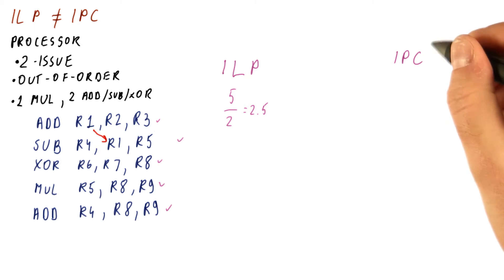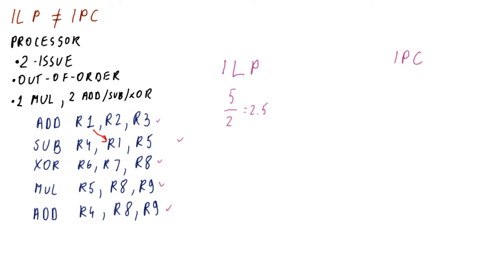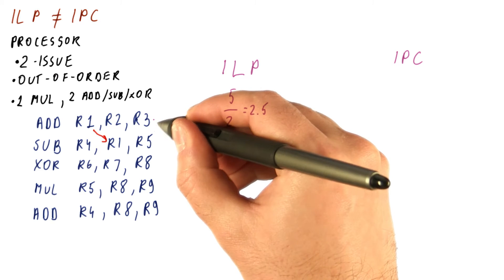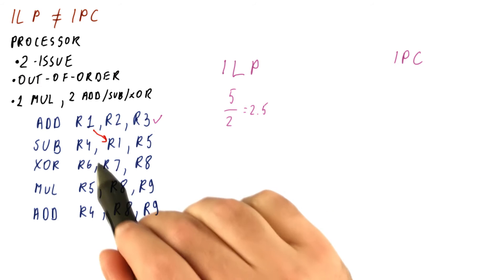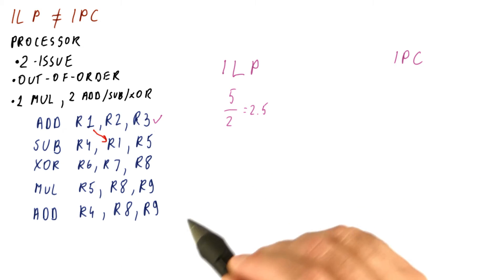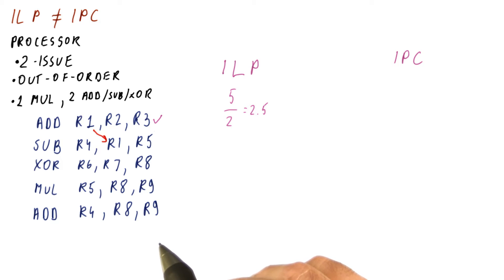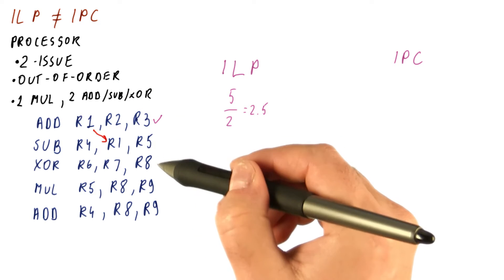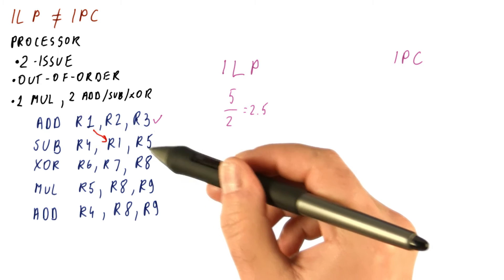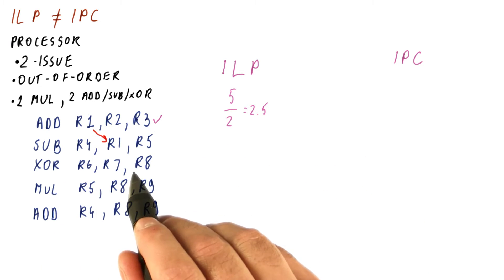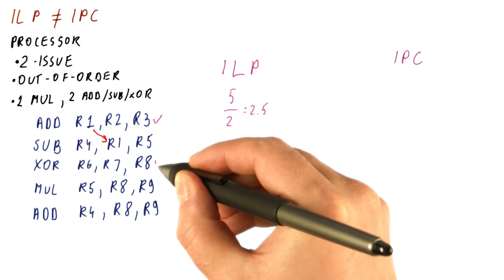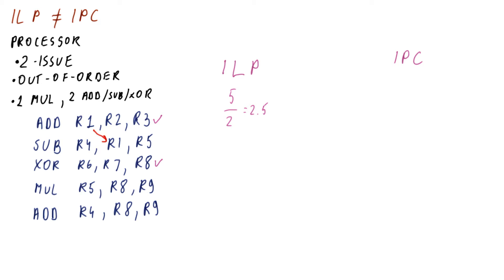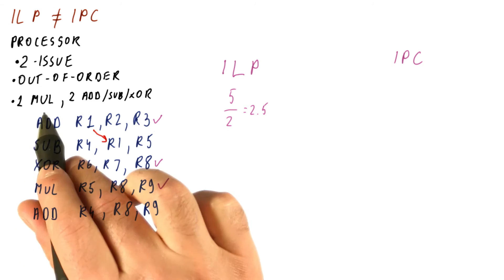In contrast, the IPC for this processor needs to consider all the limitations of this processor. We have, this instruction can be done in the first cycle. This one cannot because of a dependence. So for the IPC, we still have to obey all the dependencies. Plus, we have to also worry about the other limitations of the processor. This is an out-of-order processor, so we are not doing this. But we can still look further because we can do instructions out of order. The XOR can be done because we have two add, subtract, et cetera, units. So we can do this in the first cycle, too. This instruction can be done in the first cycle because we can use the multiplier.